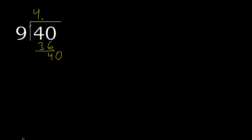40. 9 multiplied by 4 is 36. Subtract: complete, 40. 9 multiplied by 4 is 36. Is not greater. Complete. Point is here.